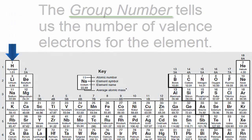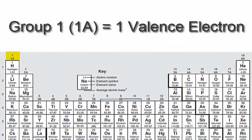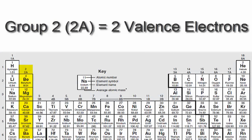For example, hydrogen has one valence electron because it's in group 1, sometimes called 1A. If you look at group 2 or 2A, you'll see that those elements have two valence electrons.